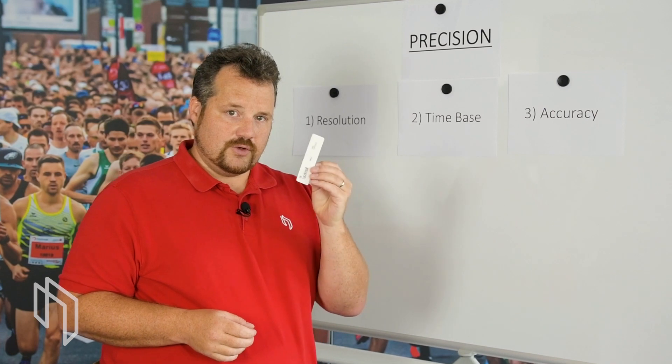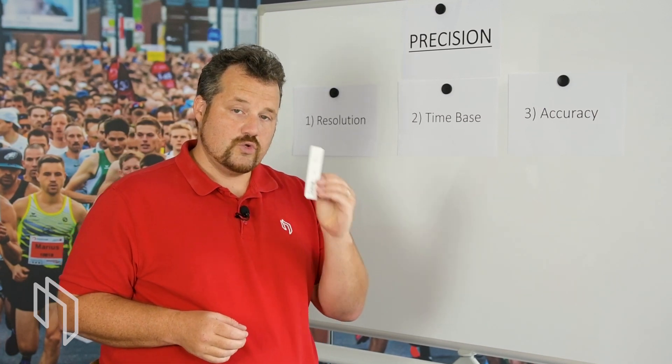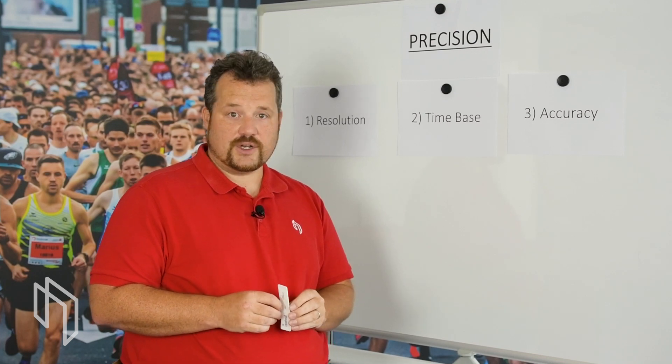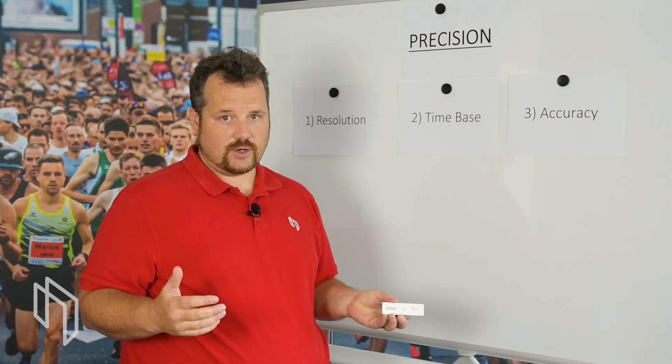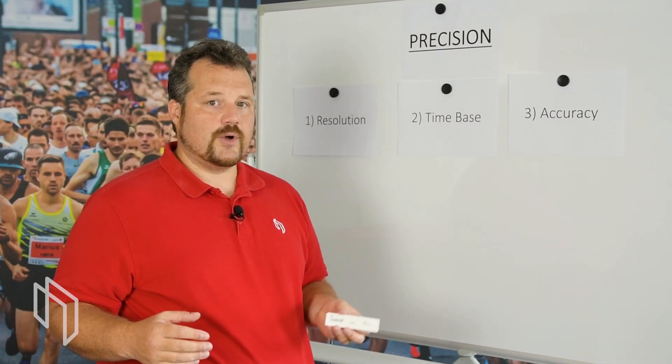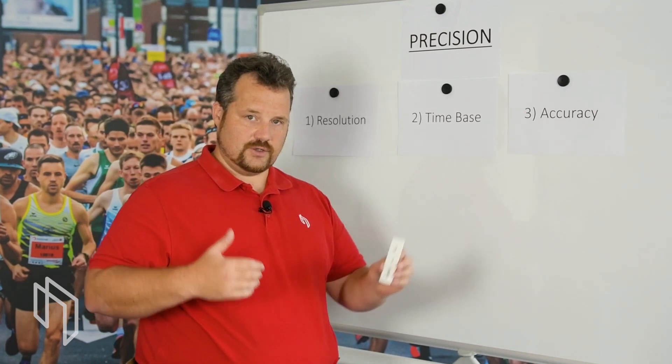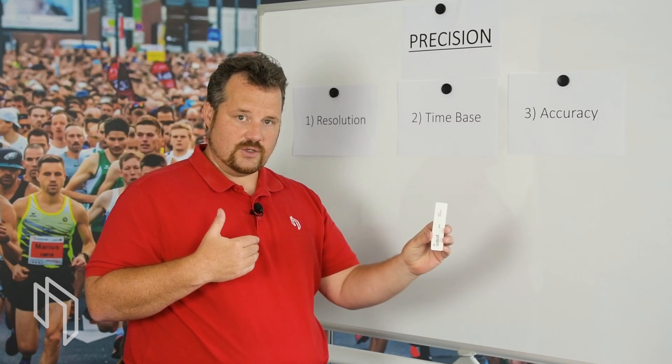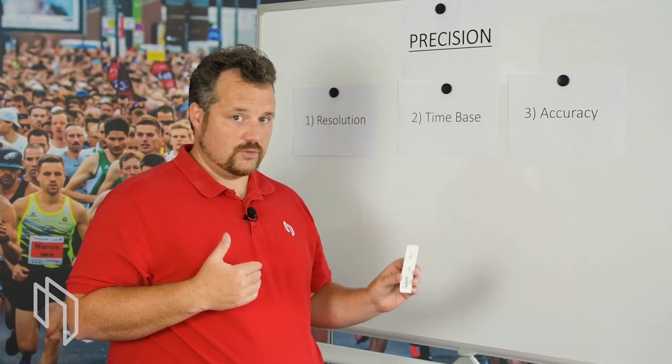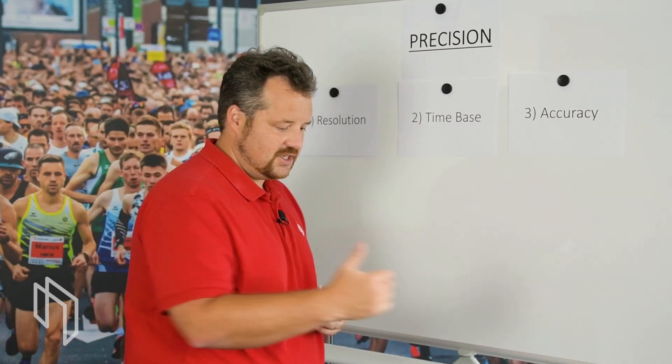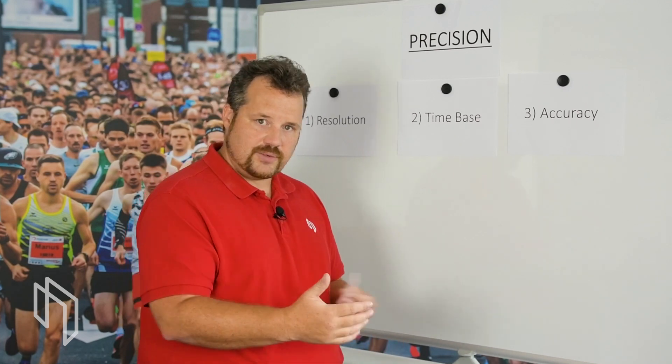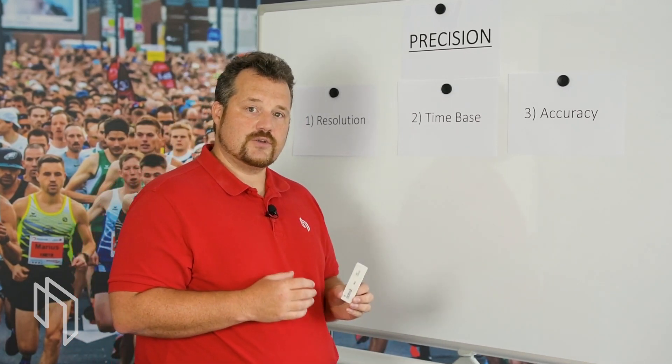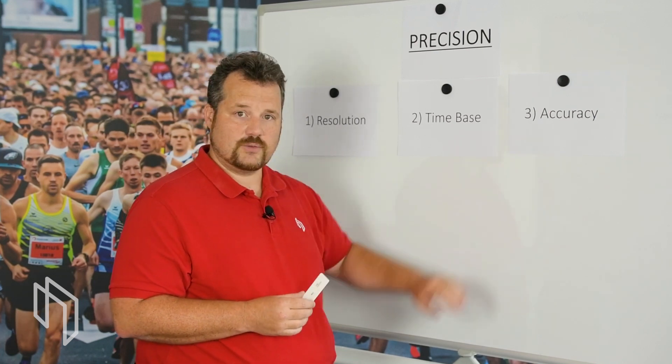To give you some numbers: if you're looking at passive transponders, 2/10ths of a second means at typical running speeds of 20 km per hour, you will get about 1.1 meters between two transponders that we need to know who was first. So that's basically one running step, more or less. And that's the kind of accuracy you can expect from our passive system.